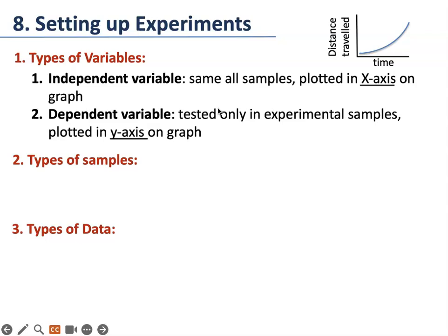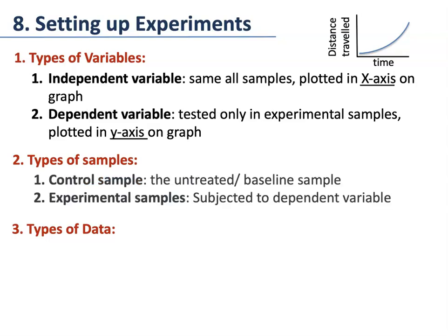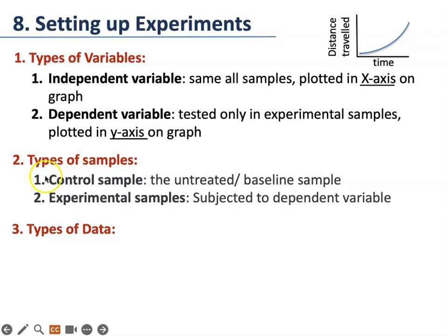When you have samples, there are two types: controls and experimental samples. The control is the untreated baseline sample, and there can be a positive and a negative control. Experimental samples are subjected to the dependent variable.